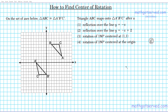Good day students, welcome to mathgotserved.com. In this clip we're going over how to find the center of rotation. The question reads: on the set of axes below, triangle ABC is congruent to triangle A'B'C'. Triangle ABC maps onto A'B'C' after — and we have four choices: a reflection over y equals x, a reflection over y equals negative x plus 2, a rotation of 180 degrees centered at (1,1), or a rotation of 180 centered at the origin.